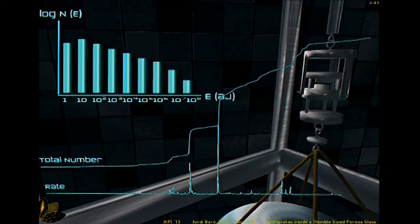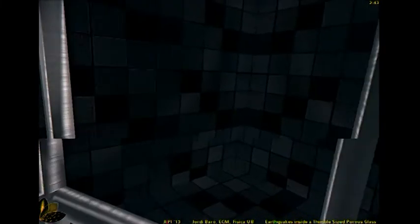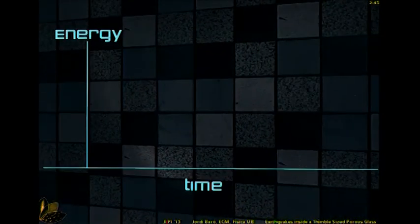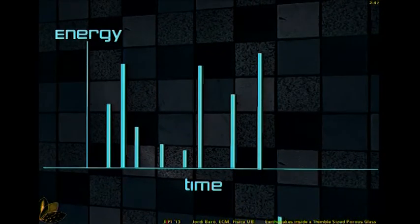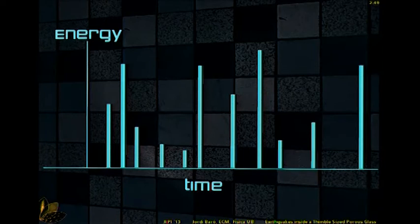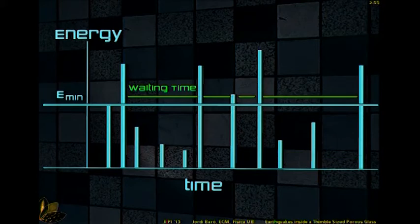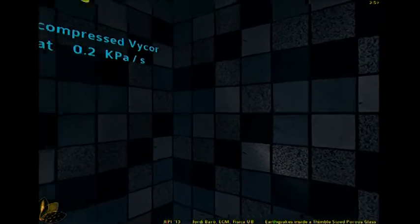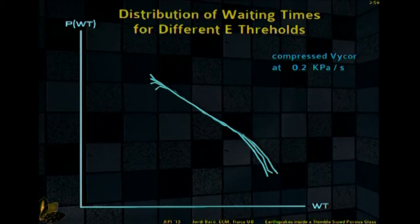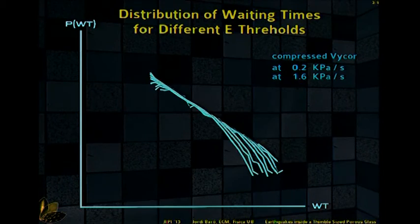Now we can study a very interesting magnitude that is waiting times between earthquakes or signals above a certain energy threshold. And if we plot the distribution of these waiting times, we find this interesting curve. This is in a double logarithmic scale.